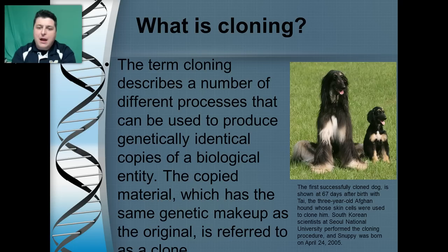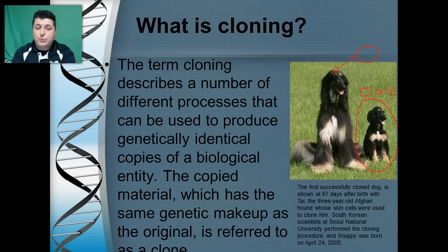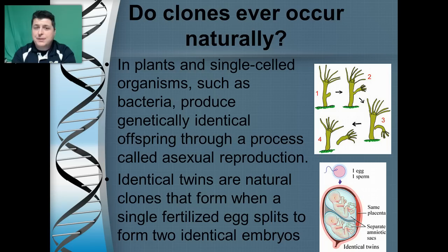For example, here we have a little puppy called Snuppie, and Snuppie is the clone of the larger dog sitting next to him — this three-year-old Afghan hound. They took some skin cells and placed that into an egg, then put that into a surrogate mother, and produced our clone here.